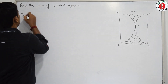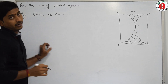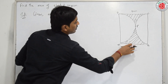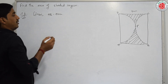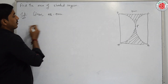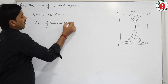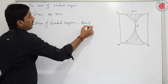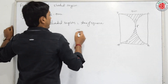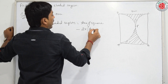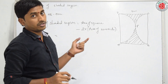Let us write the solution. Given AB equals 7 centimetre. If this whole side is 7, then the radius of the semicircle is 7 by 2, which is 3.5 centimetre. Area of shaded region equals area of square minus twice of area of semicircle. That is side into side, minus 2 into half into pi r square.